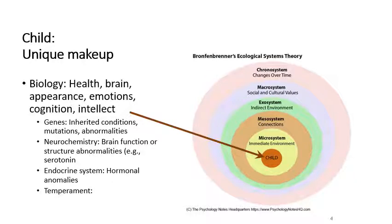Each child has a unique makeup. We're all born with a certain set of chromosomes and genes — locations on those chromosomes that we inherit from our parents. Within this inheritance process, there can be traits we get, mutations, things that can go wrong, or abnormalities like an extra chromosome. All of these things can impact behaviors and characteristics.